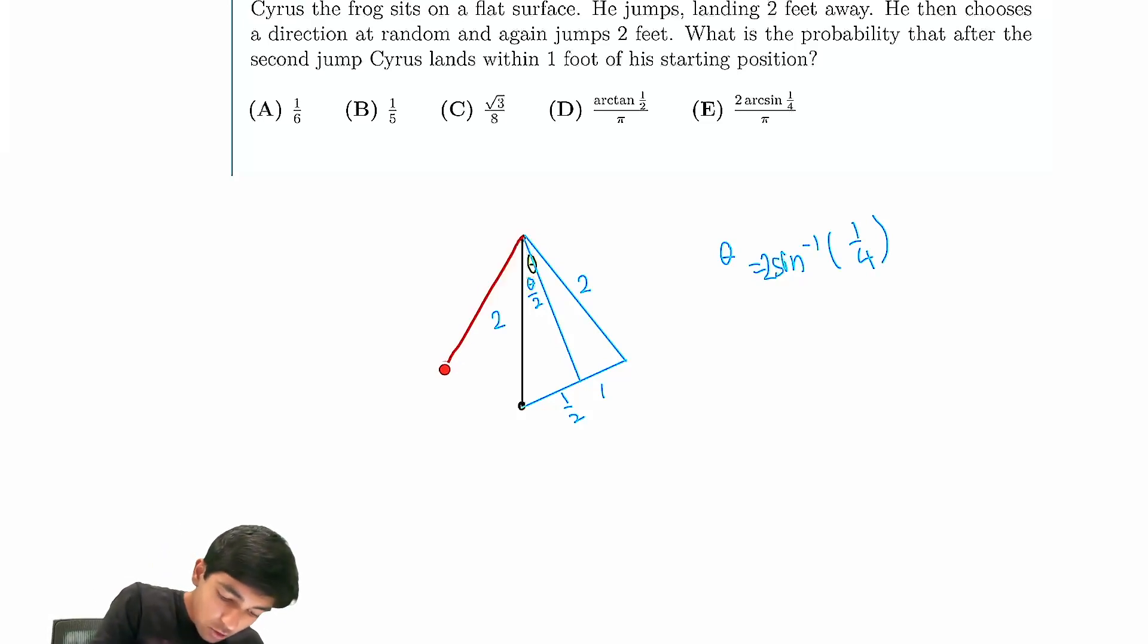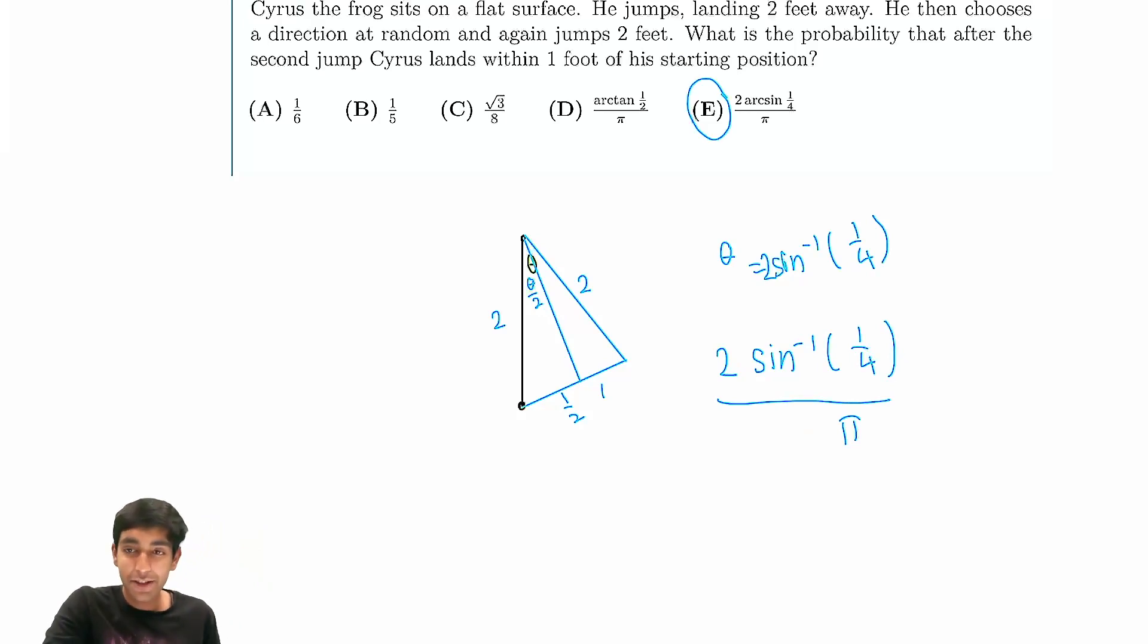And remember that there's also going to be two arc sine one fourth on the other side, the maximum value of theta on the other side, right? Because it can go either way. So we have four times sine inverse one fourth, and we have to divide this by the total angle, which is two pi. So this cancels out to get two arc sine one fourth over pi. And that is the answer for this problem.